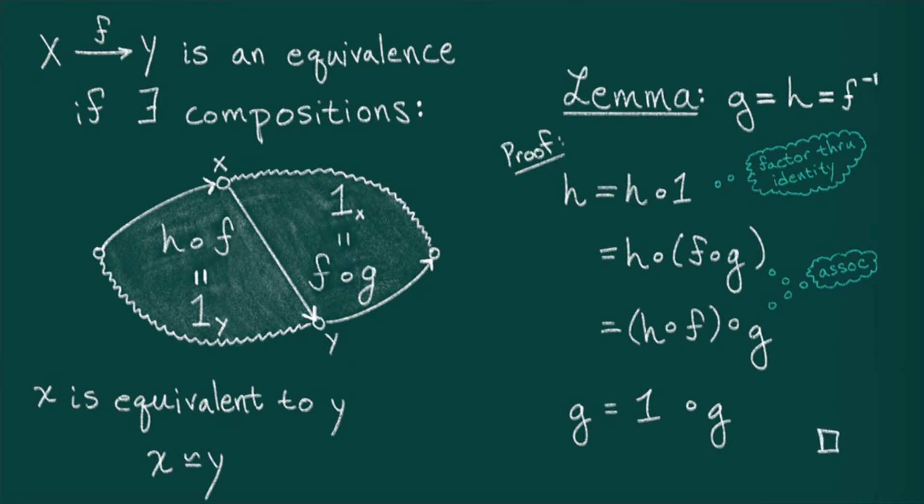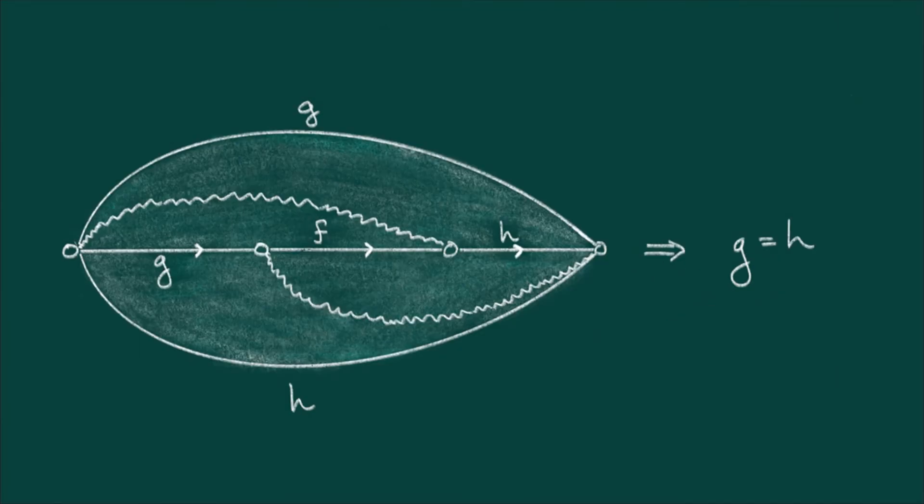This algebraic derivation is nice if you like plugging in formal definitions. But I can also see this lemma diagrammatically. Namely, if I stretch out f, g, and h, and then compose them, note that I obtain the associativity diagram. Therefore, the coincidence of the left and right inverses, namely g and f, as well as the uniqueness of the inverse, follow from the associativity condition.